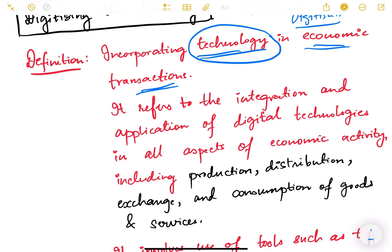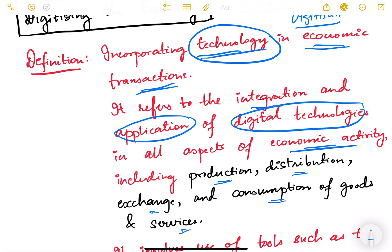It basically means integrating and applying digital technologies in different aspects of economic activity, including production, distribution, exchange, and consumption of goods and services. So the integration and application of digital technologies in different aspects of economic activities is called digitizing the economy.